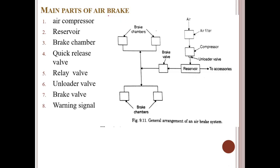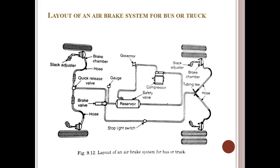The main parts of the air brake system are: air compressor, reservoir, brake chamber, quick release valve, relay valve, unloader valve, brake valve, and warning signals. In the diagram, we can see the brake chambers, brake valve, reservoir, unloader valve, compressor, air filter, atmospheric air inlet, and brake chambers. The general layout also includes gauges, quick release valve, slack adjusters, safety valve, and tubing.